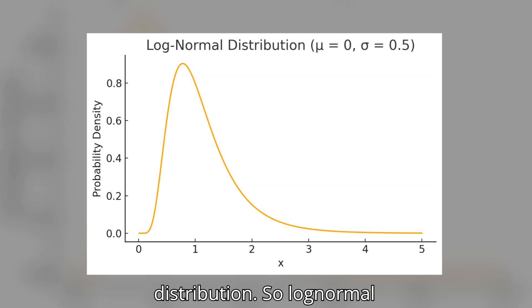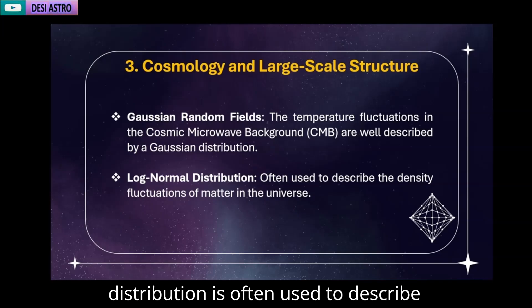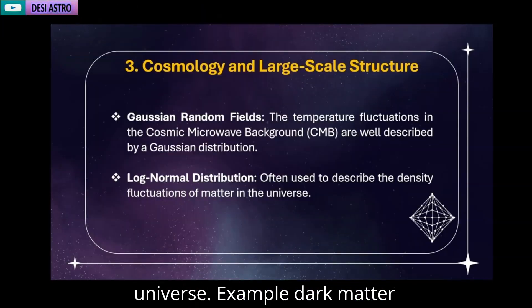Next is the log normal distribution. Log normal distribution is often used to describe the density fluctuations of matter in the universe. For example, dark matter distribution is simulated using a log normal distribution.